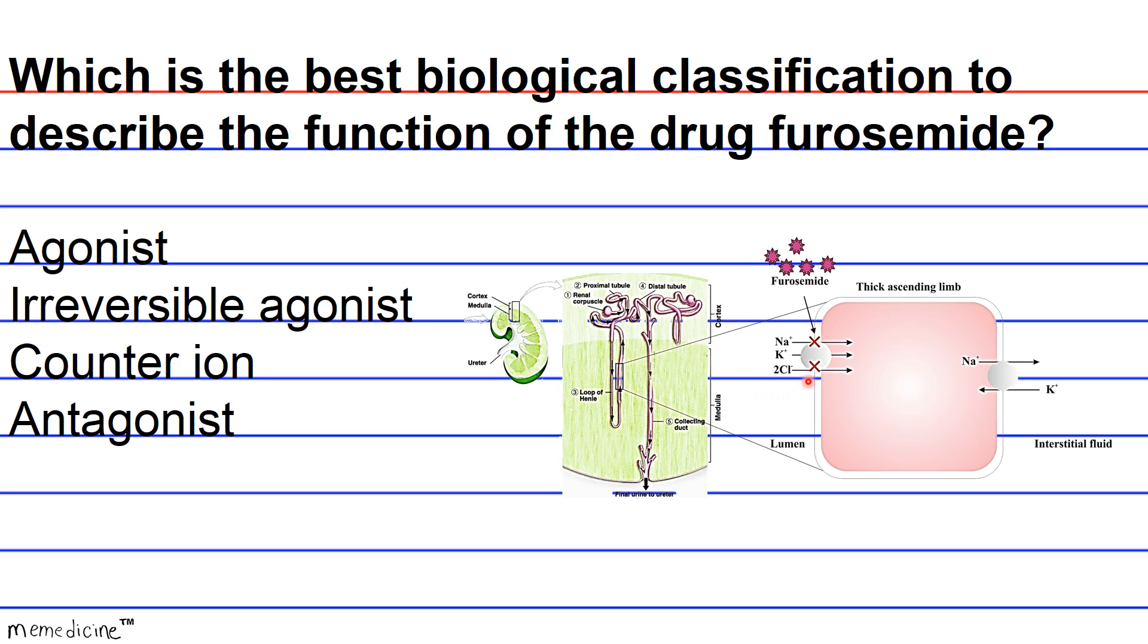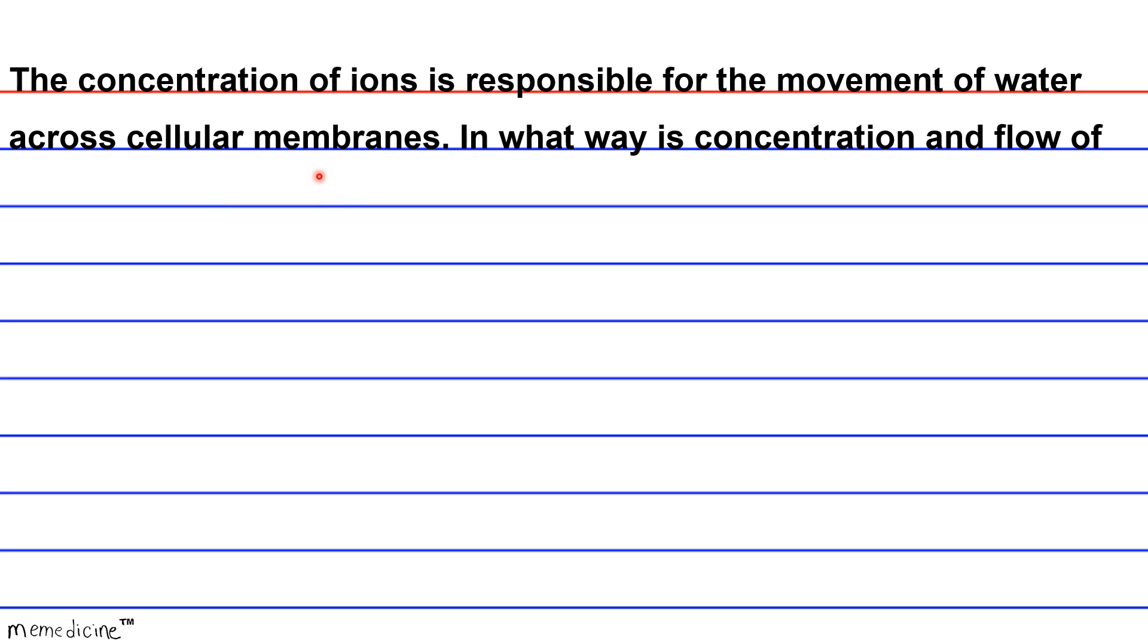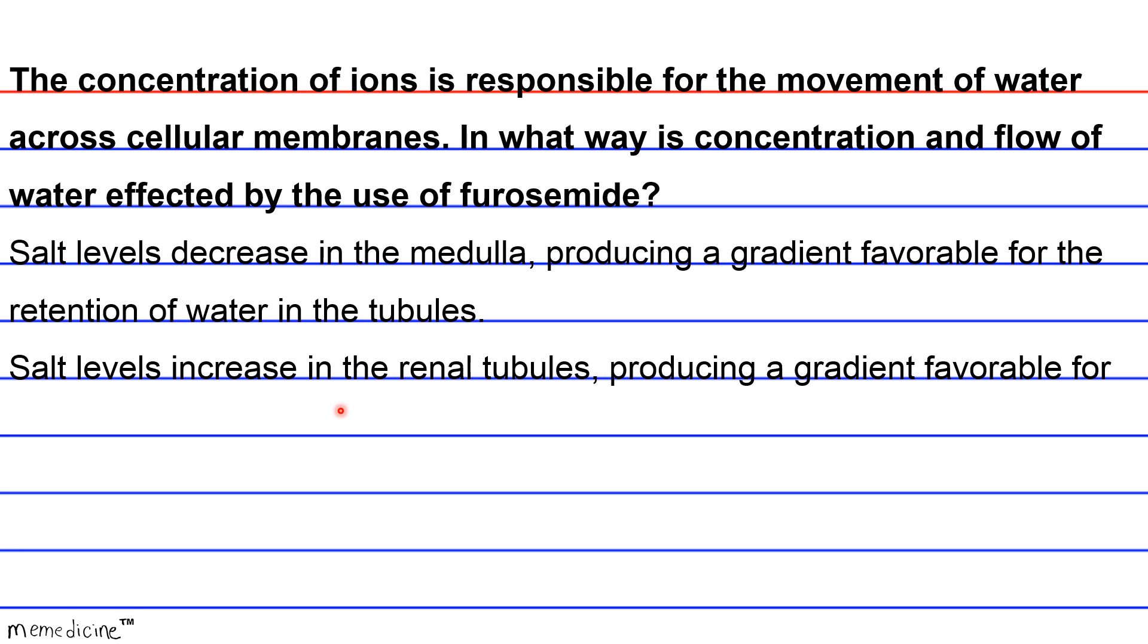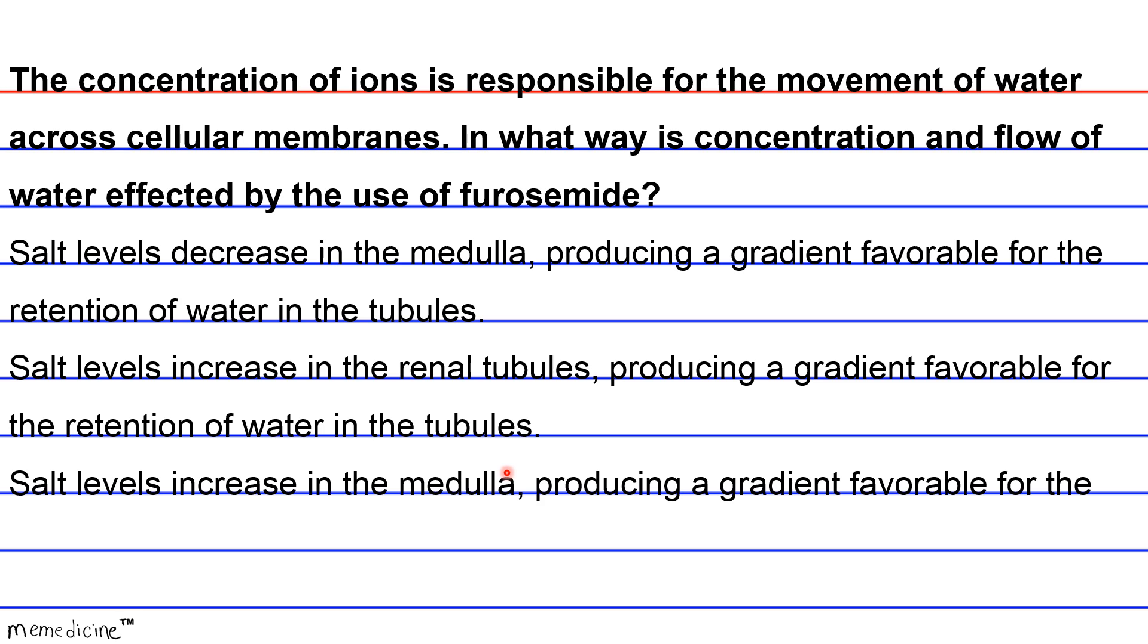The concentration of ions is responsible for the movement of water across cellular membranes. In what way is the concentration and flow of water affected by the use of furosemide? Is it A, salt levels decrease in the medulla, producing a gradient favorable for water retention in the tubules? Is it B, salt levels increase in the renal tubules, producing a gradient favorable for the retention of water in the tubules? Or is it C, salt levels increase in the medulla, producing a gradient favorable for the retention of water in the tubules? I'll give you a moment to think.